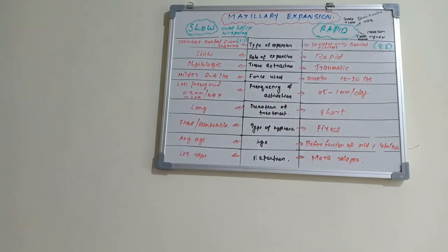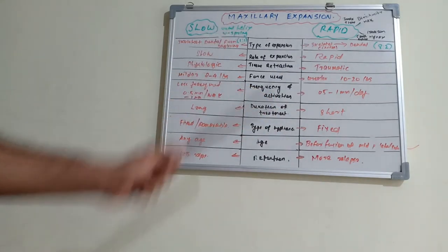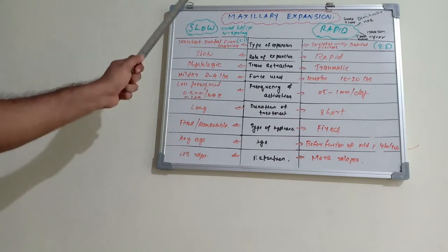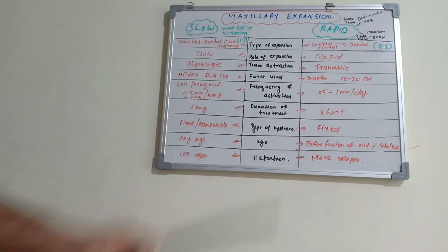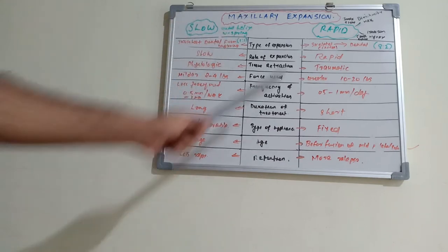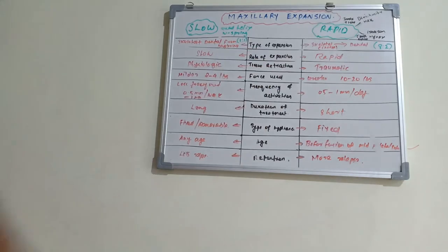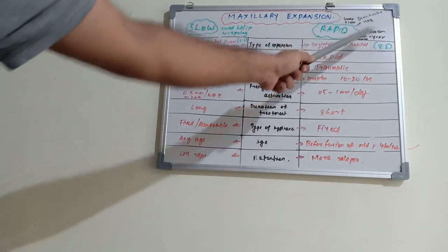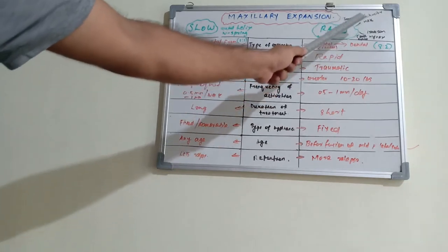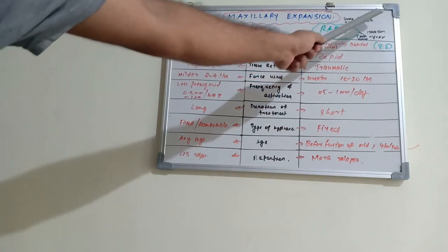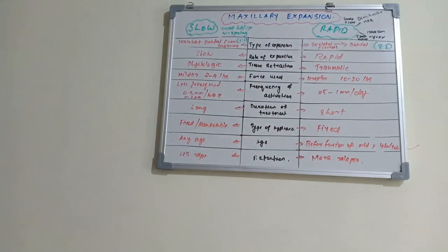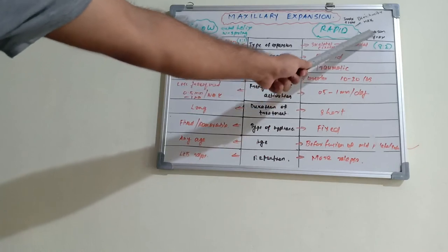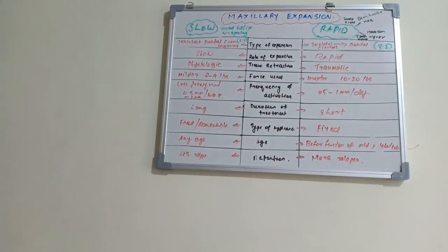Let's see some examples of slow expansion devices: the quad helix and W-spring. For rapid expansion devices, we have tooth-and-tissue-bone types, including the Ricketts and Haas-type appliances, and tooth-bone types, including the Isaacson and Hyrax appliances.